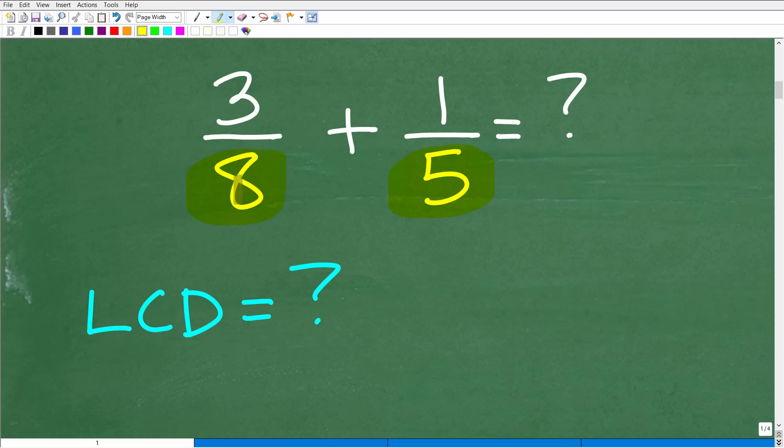So the bottom numbers, the denominators must be the same. Now, in this case, we have 8 and 5. So clearly, these denominators are not the same. So we have to find a common denominator.